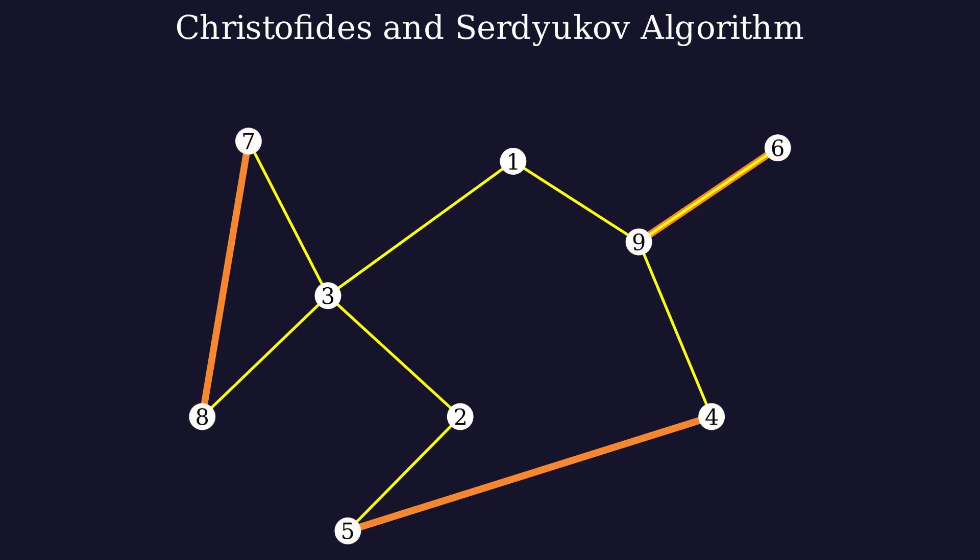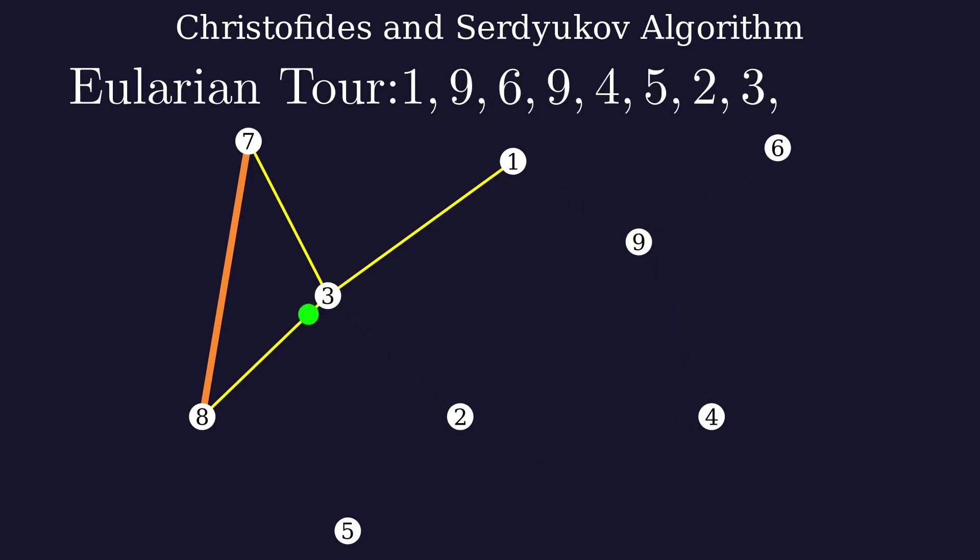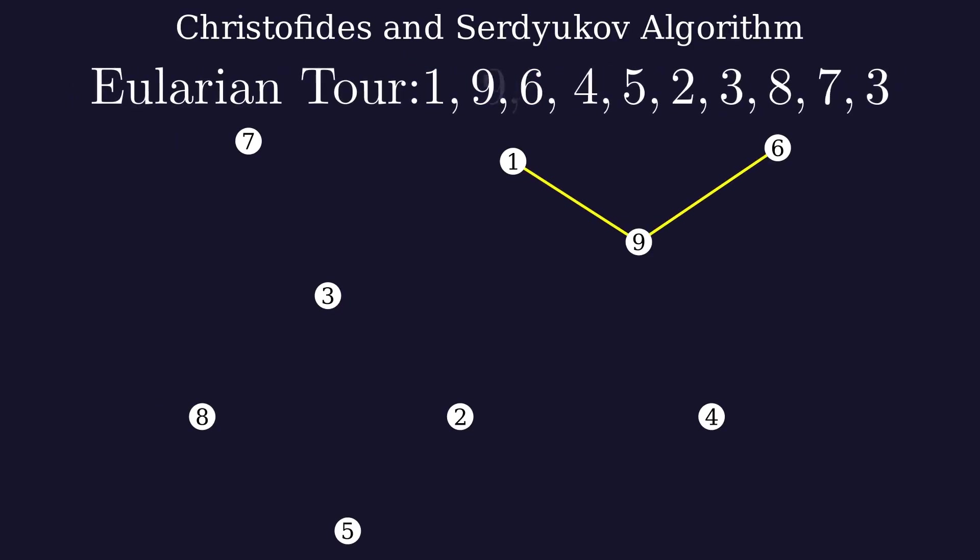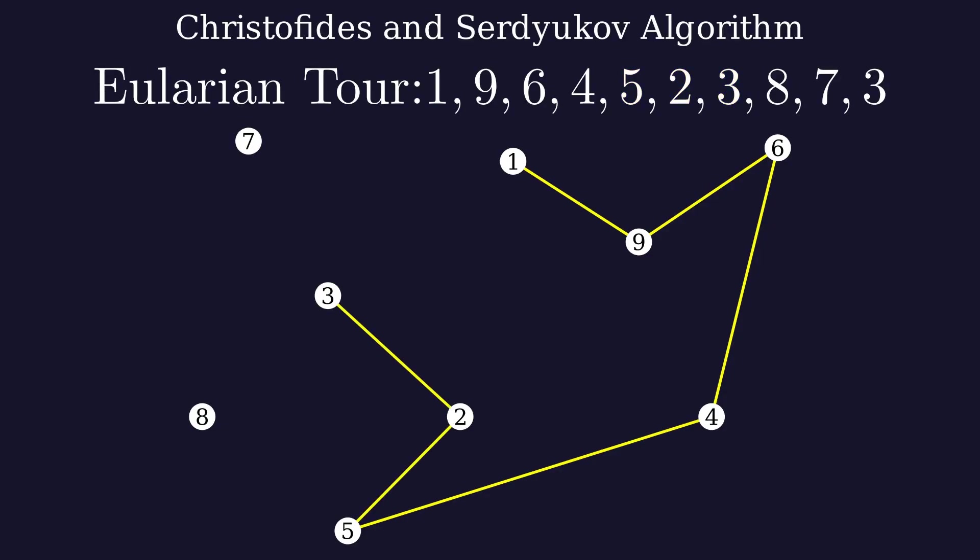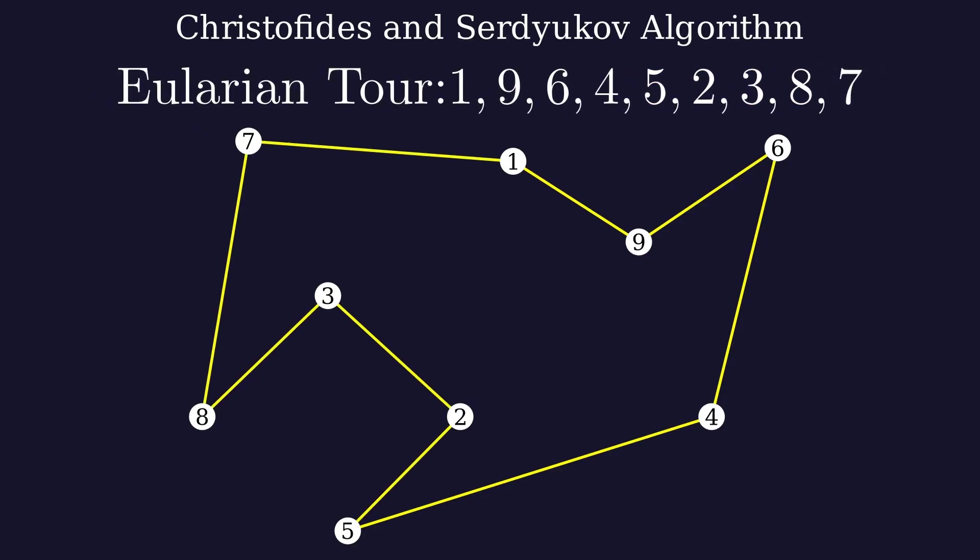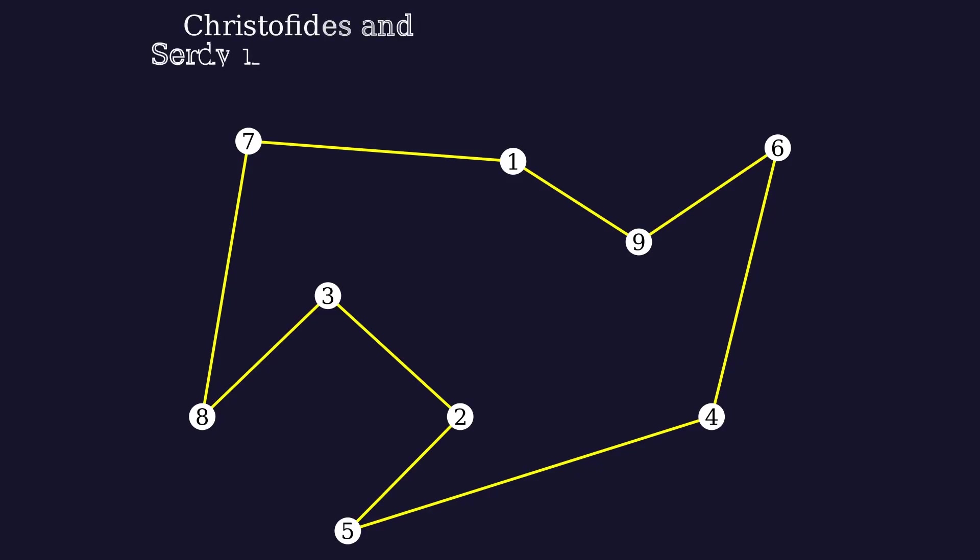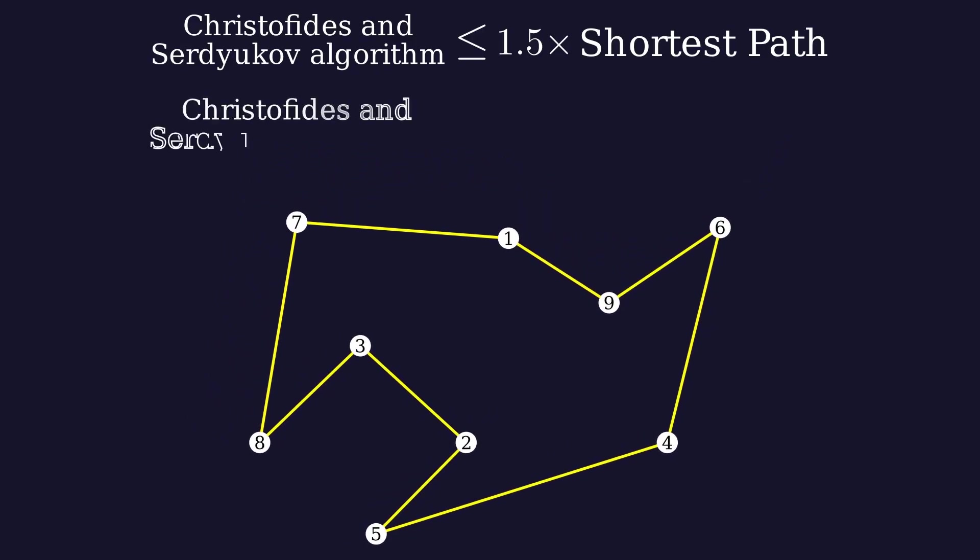Now we build what's called an Eulerian Tour. This is a path that covers every edge exactly once. Now we go through the tour again and remove every node that we have already visited. That gives us a valid path for the salesman. This algorithm guarantees us to find the path that is at most 50% longer than the true shortest path. And on average, the path created by this algorithm is only 10% longer than the lower bound.